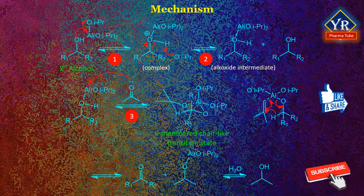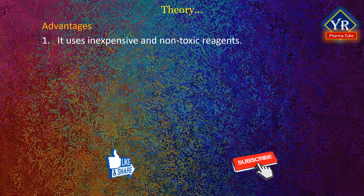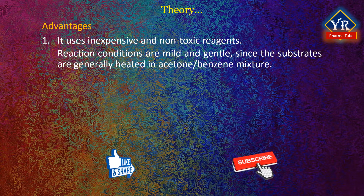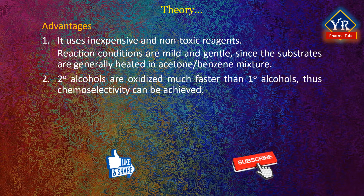The desired ketone is formed after the transfer of the hydride ion. An advantage of Oppenauer oxidation is its use of relatively inexpensive and non-toxic reagents. Reaction conditions are mild and gentle since the substrates are generally heated in acetone and benzene mixtures. Another advantage is that secondary alcohols are oxidized much faster than primary alcohols, thus chemoselectivity can be achieved. Furthermore, there is no over-oxidation of aldehydes to carboxylic acids, as opposed to other oxidation methods such as Jones oxidation.